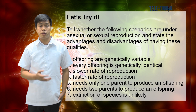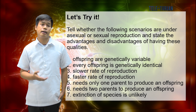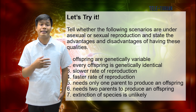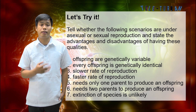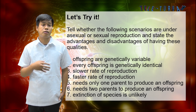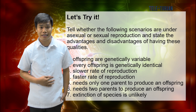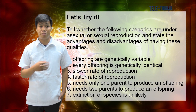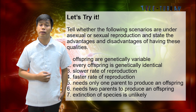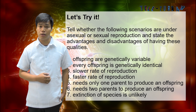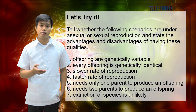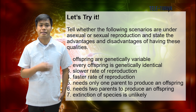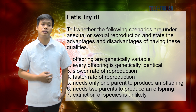Tell whether the following scenarios are under asexual or sexual reproduction and state the advantage and disadvantage of having these qualities. Number one: offspring are genetically variable. Number two: every offspring is genetically identical. Number three: slower rate of reproduction. Number four: faster rate of reproduction. Number five: needs only one parent to reproduce an offspring. Number six: needs two parents to produce an offspring. Number seven: extinction of species is unlikely.